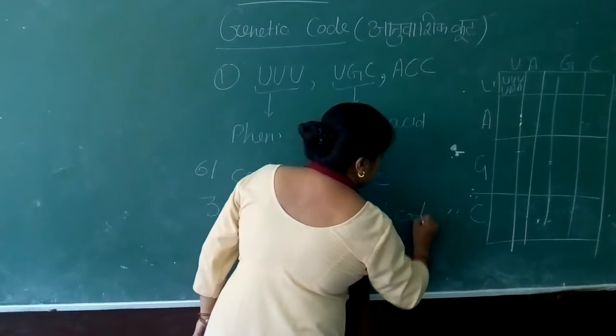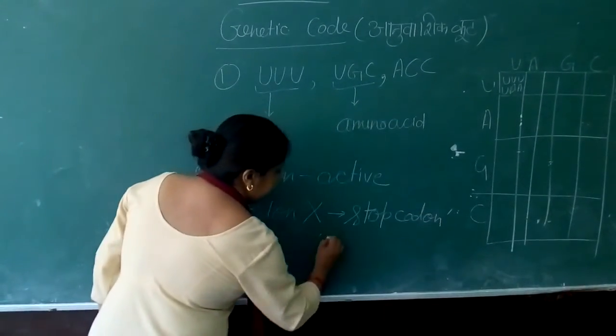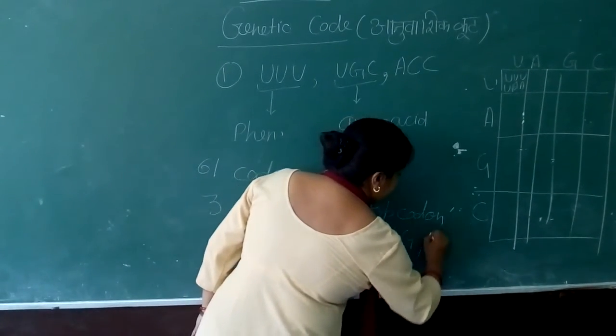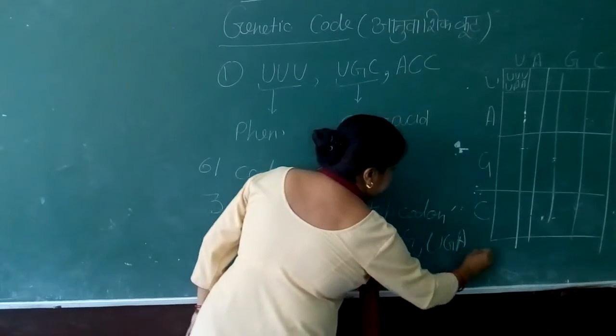These are the stop codons: UAA, UAG, and UGA.